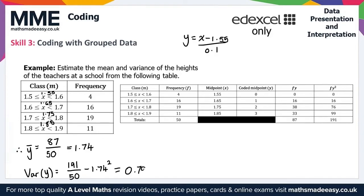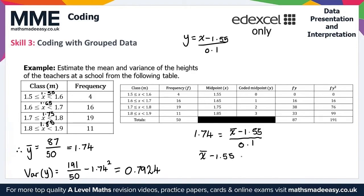Calculating that on a calculator gives Var(y) equals 0.7924. Using the coding formula to find x-bar: 1.74 equals (x-bar minus 1.55) over 0.1. Solving gives x-bar minus 1.55 equals 0.174, so x-bar equals 1.724.